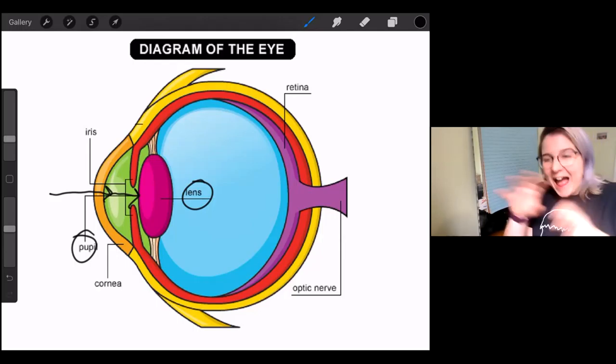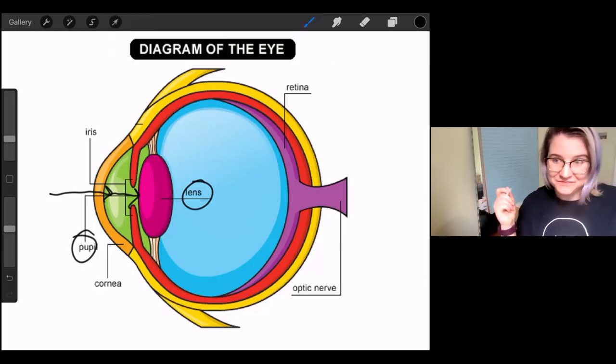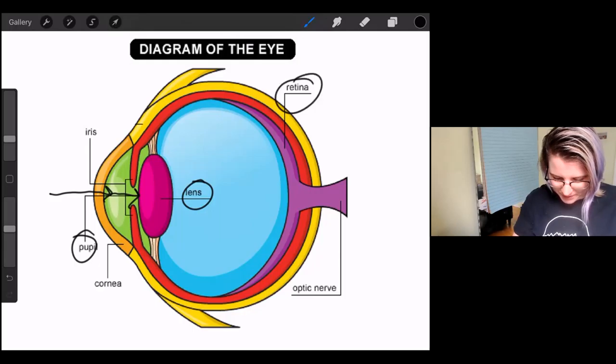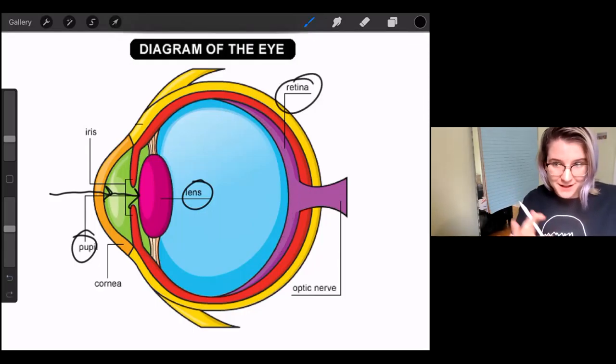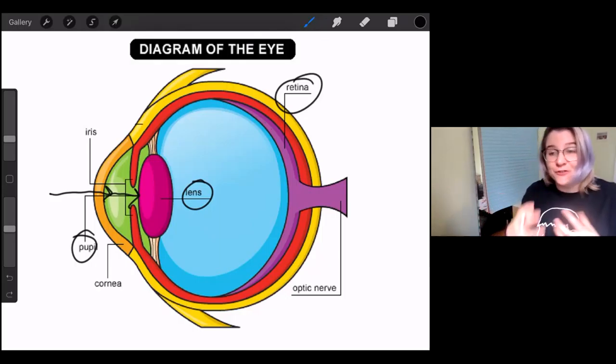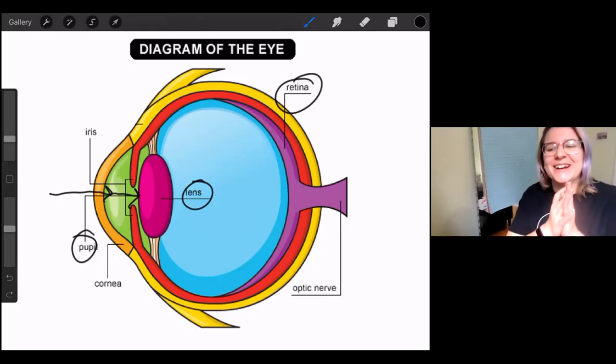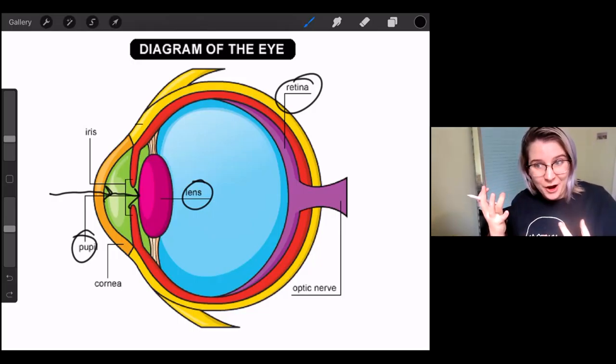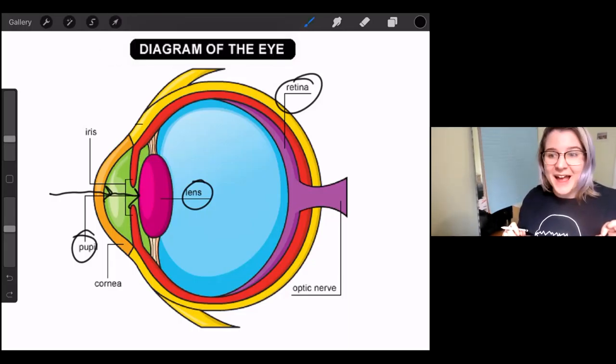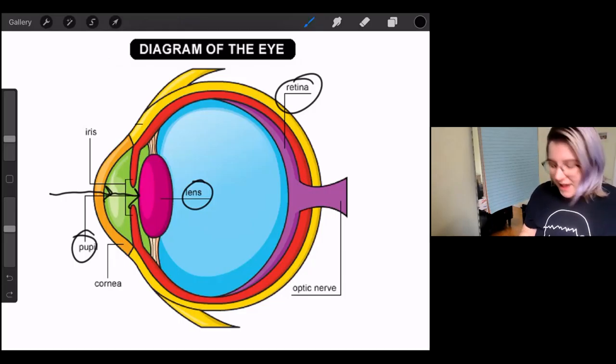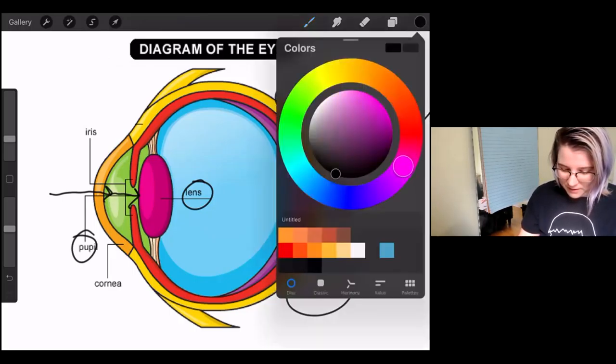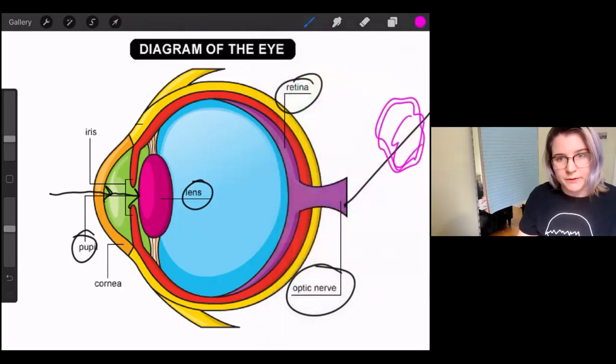So what happens after the light hits the lens? It goes to the retina here. This purple part. So what the retina does is that it converts the light that went through, that entered your eye, and it converts it into an electronic signal. Right. The human body is so crazy amazing and cool. So once the retina converts that light into an electric signal, then it hits the optic nerve and the optic nerve is what sends that electric signal to the brain. That's obviously a picture of my brain. That's what it looks like.